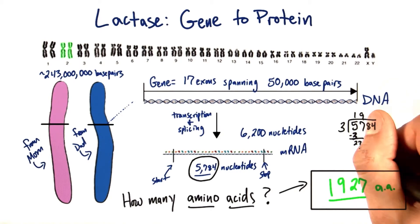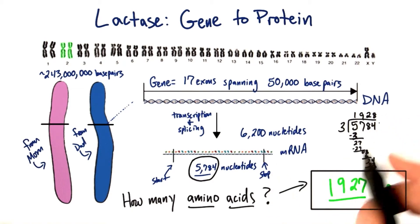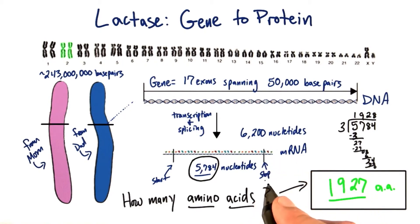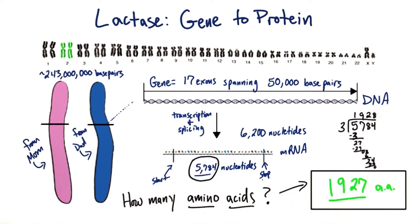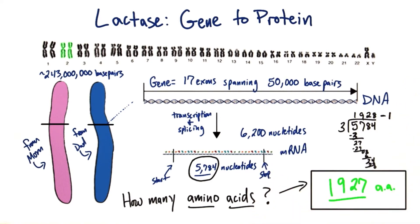1,928. But why do we not get 1,927? Remember that 1,928 includes the stop codon, but the stop codon doesn't have an amino acid associated with it. The start codon does — it has methionine, or MET, or M. But the stop codon doesn't have any amino acid associated with it. So we get 1,928 when we divide 5,784 by 3, but then we need to subtract 1 because the last codon isn't turned into an amino acid. And so then we're left with 1,927 amino acids.